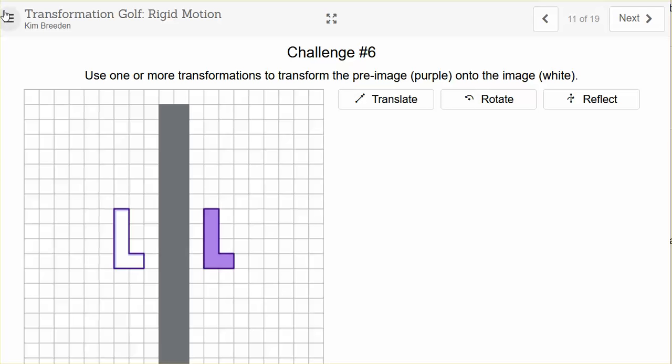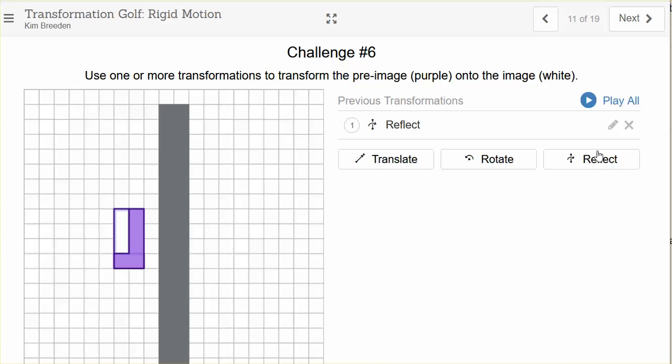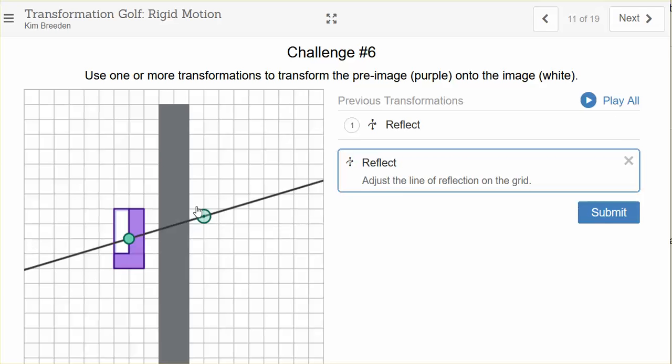In slide 11, this time we're going from the purple, again, on the right, over to the white, which is on the left. We're definitely going to have to reflect to get over the wall. So again, I can change the direction of my mirror. But notice now when I reflect, I'm pointing in the wrong direction. So I'm going to have to reflect again to get pointing in the right direction.